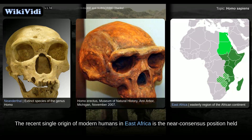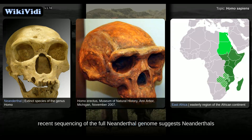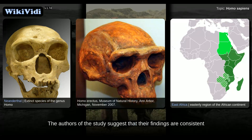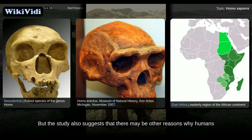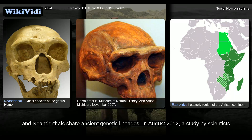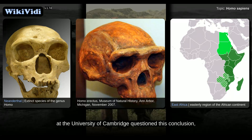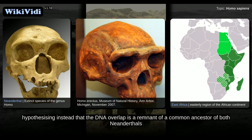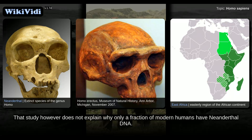The recent single origin of modern humans in East Africa is the near-consensus position held within the scientific community. However, recent sequencing of the full Neanderthal genome suggests Neanderthals and some modern humans share some ancient genetic lineages. The authors of the study suggest that their findings are consistent with Neanderthal admixture of up to 4% in some populations, but the study also suggests that there may be other reasons why humans and Neanderthals share ancient genetic lineages. In August 2012, a study by scientists at the University of Cambridge questioned this conclusion, hypothesizing instead that the DNA overlap is a remnant of a common ancestor of both Neanderthals and modern humans. That study, however, does not explain why only a fraction of modern humans have Neanderthal DNA.